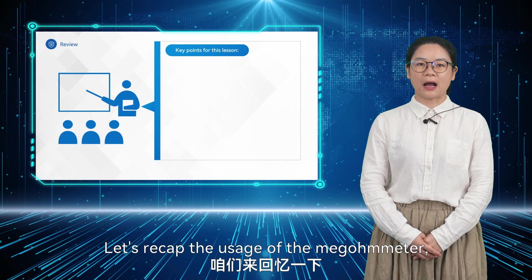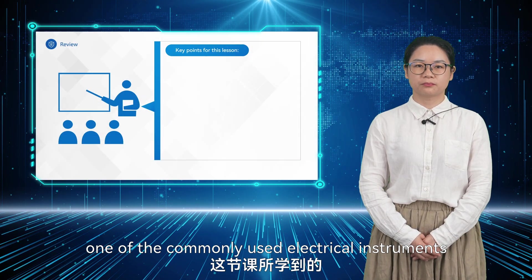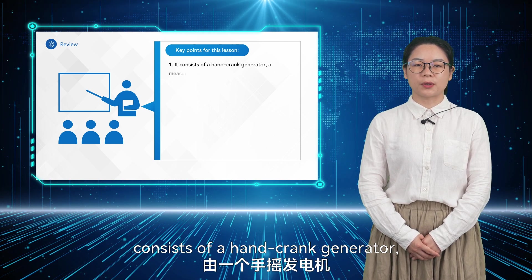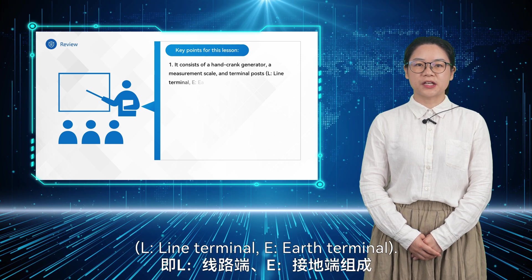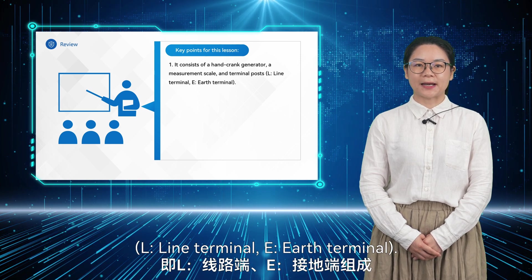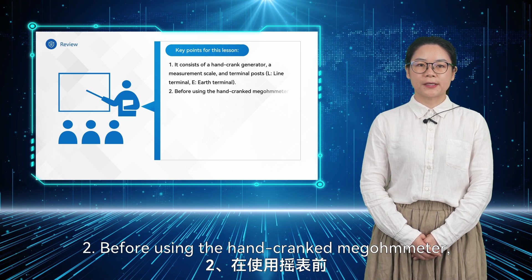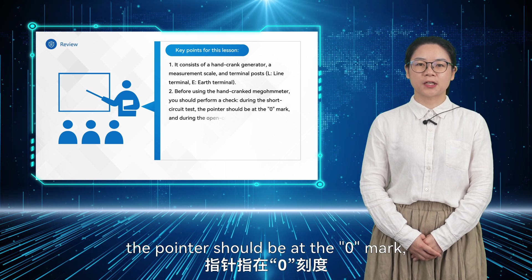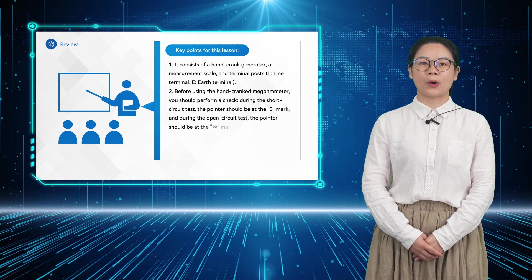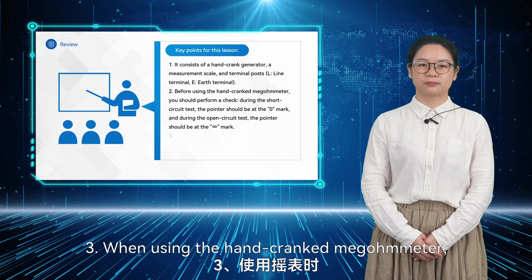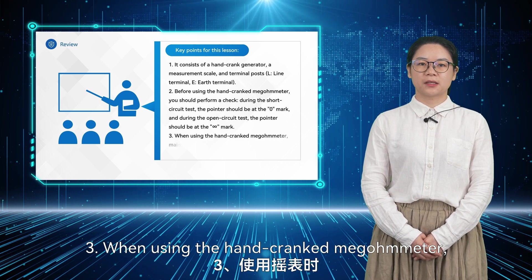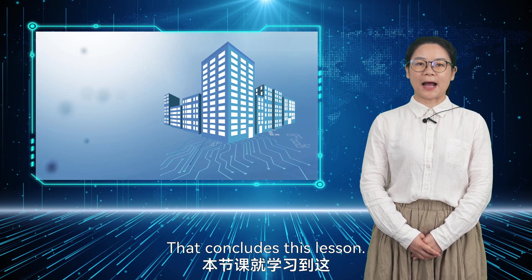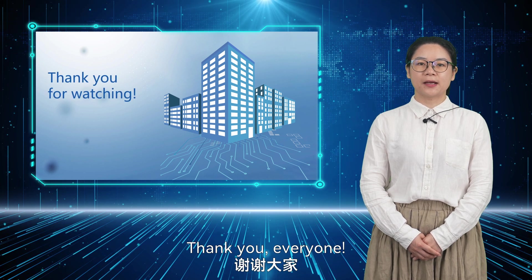Let's recap the usage of the megometer. First, a megometer consists of a hand-crank generator, measurement scale, and terminal posts L (line terminal) and E (earth terminal). Second, before using the hand-cranked megometer, perform a check: during the short-circuit test, the pointer should be at the zero mark, and during the open-circuit test, the pointer should be at the infinity mark. Third, when using the hand-cranked megometer, maintain a hand-cranking speed of 120 revolutions per minute. That concludes this lesson. Thank you, everyone.